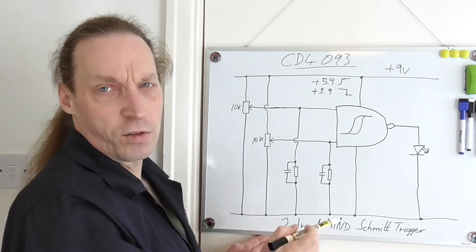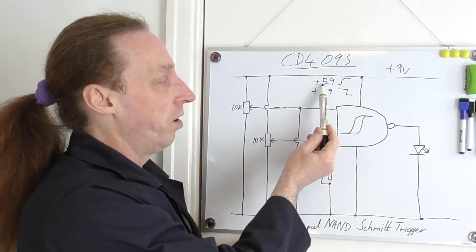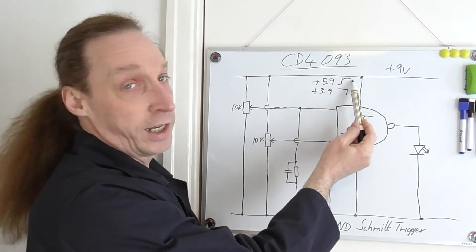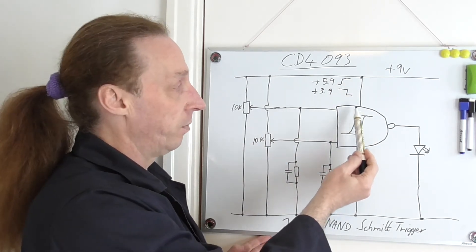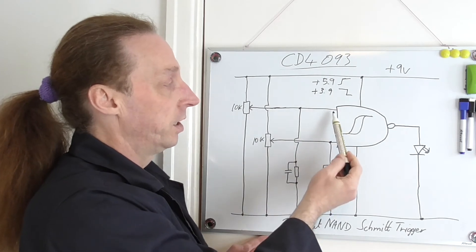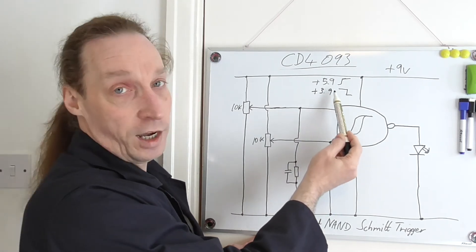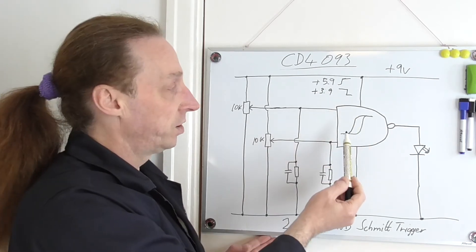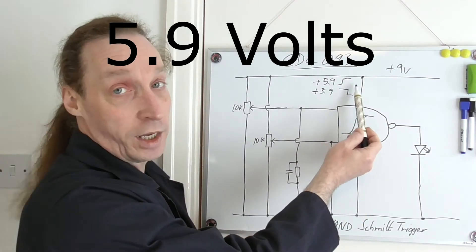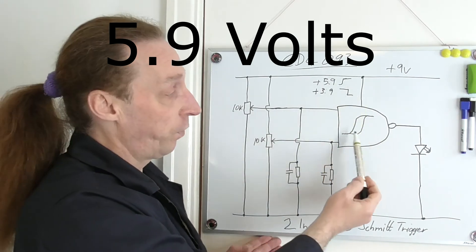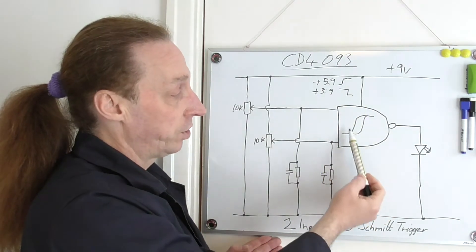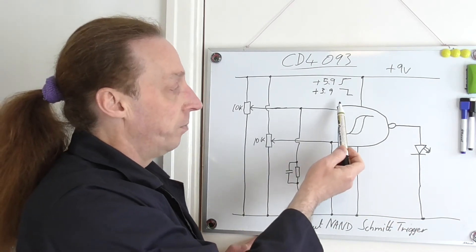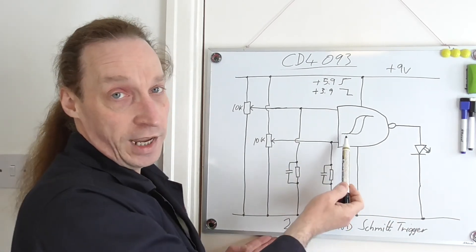So you can see that on there, we've gone from it showing us as an input of low. At 5.9 it'll now take that as being a high input, and at 3.9 it'll then say okay, I'm now taking that to be a low input. So both inputs have to get to 5.9 first before it says okay, I've got two highs and turns off the output.